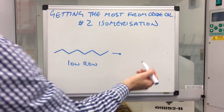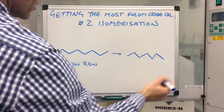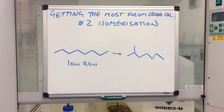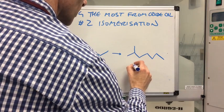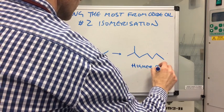So if this is octane, the easiest one to go for would be one, two, three, four, five, six, seven and put one branch on like that. And that's absolutely fine because you haven't changed the number of carbons or hydrogens. You've just turned it into a branched isomer. So this has got a higher RON value.